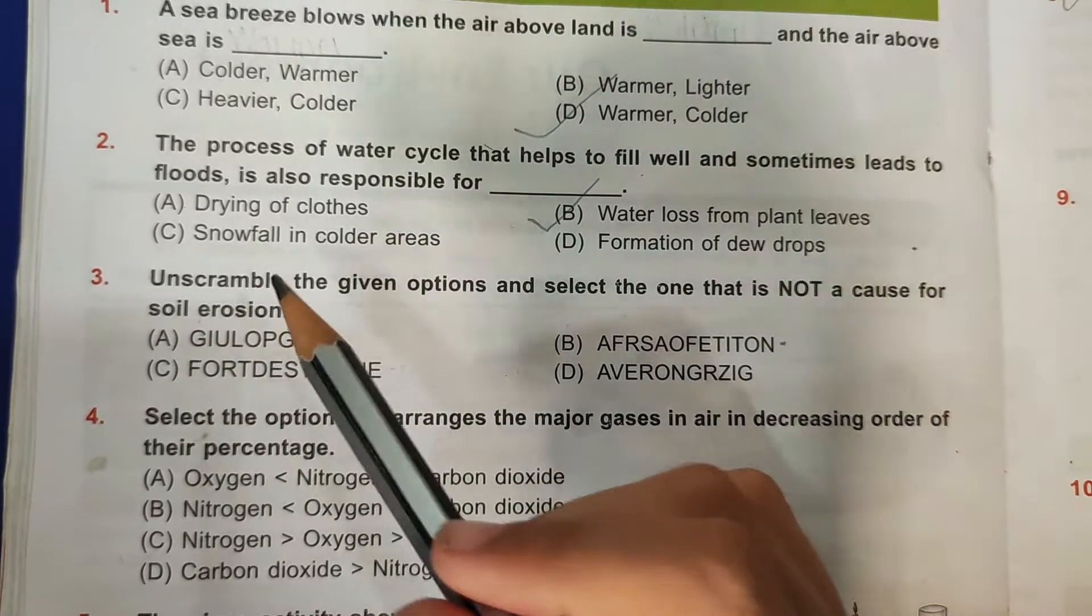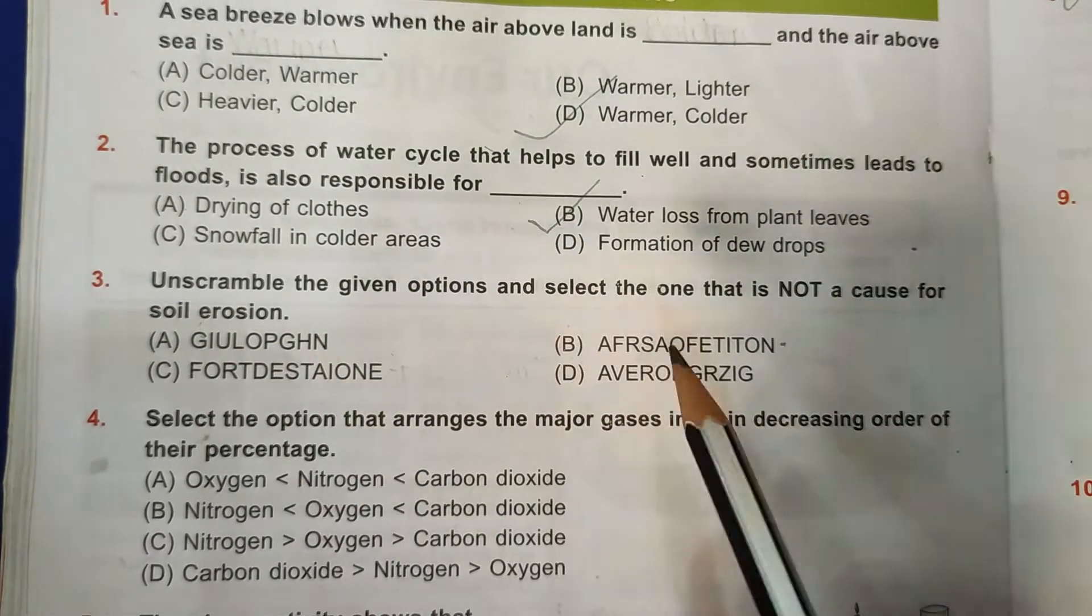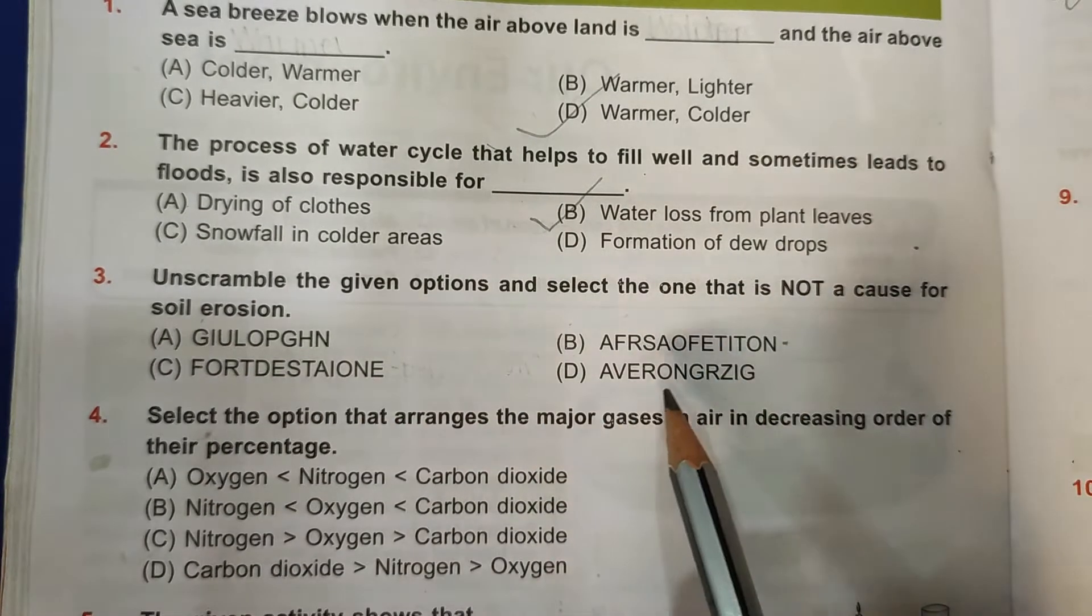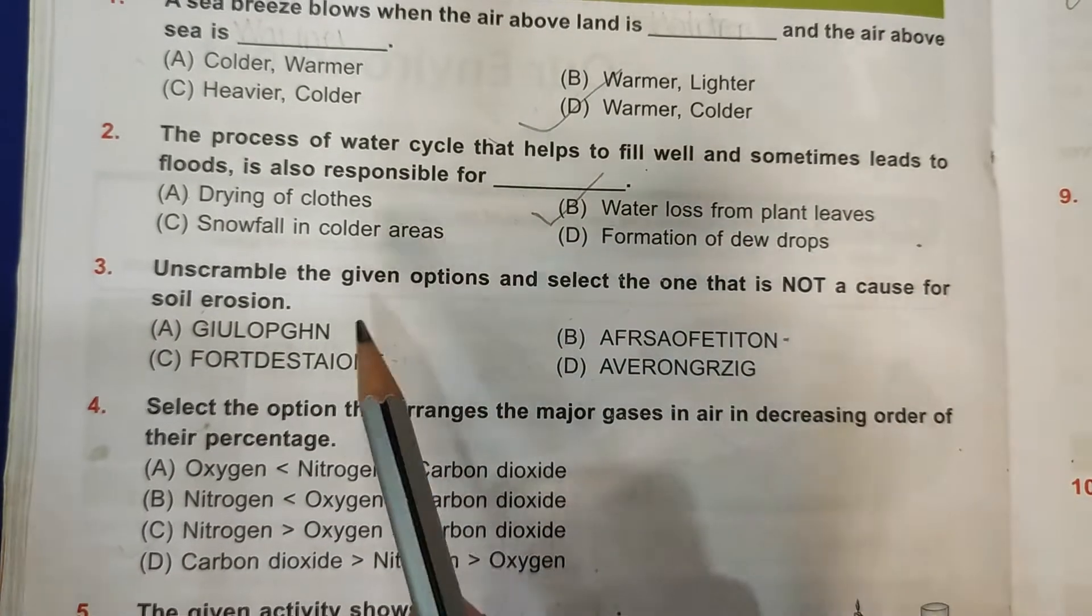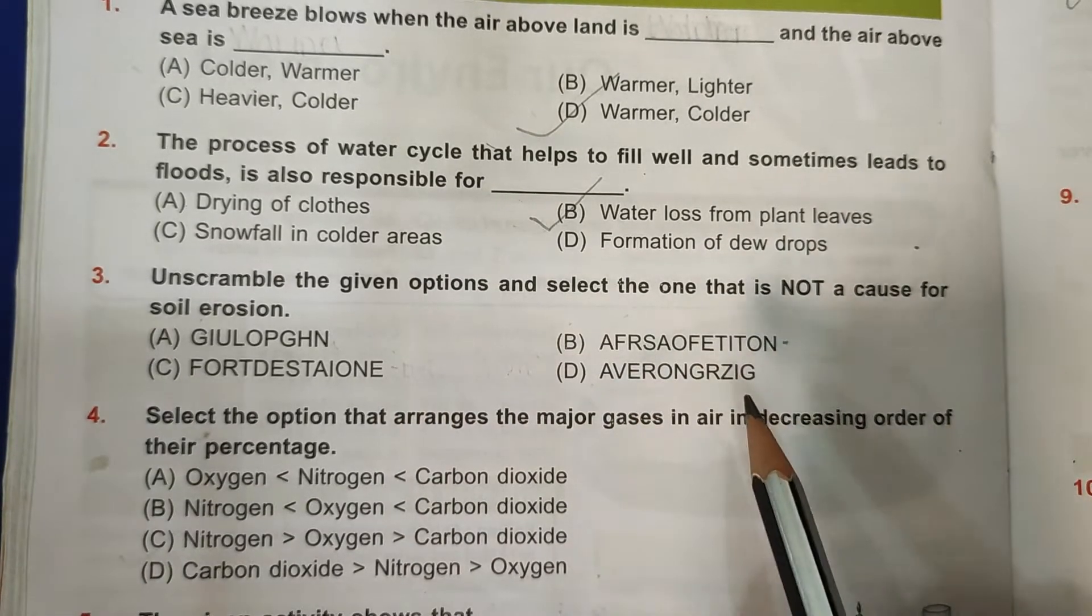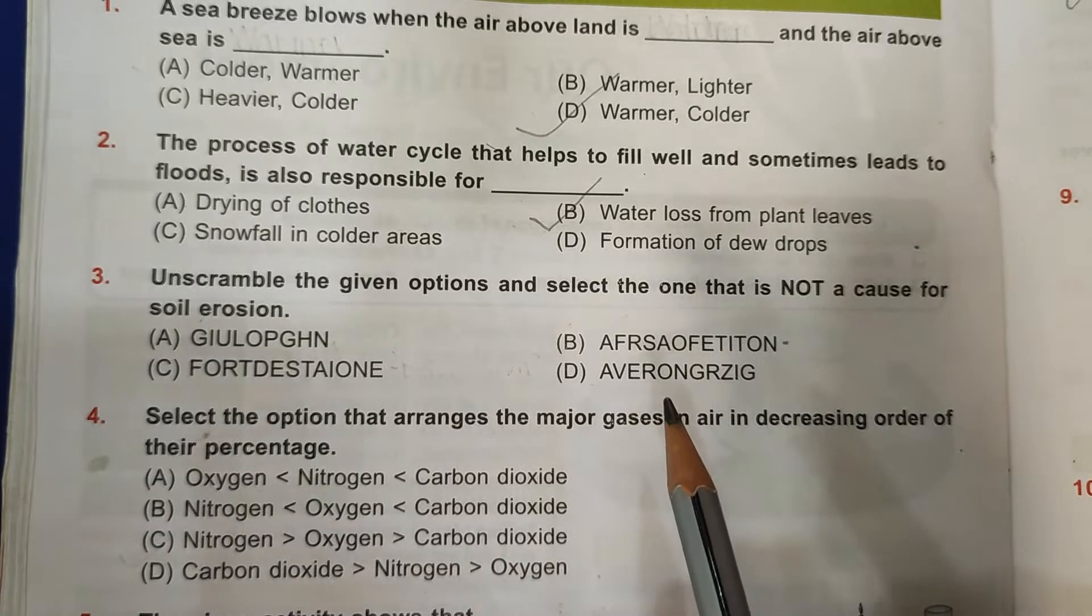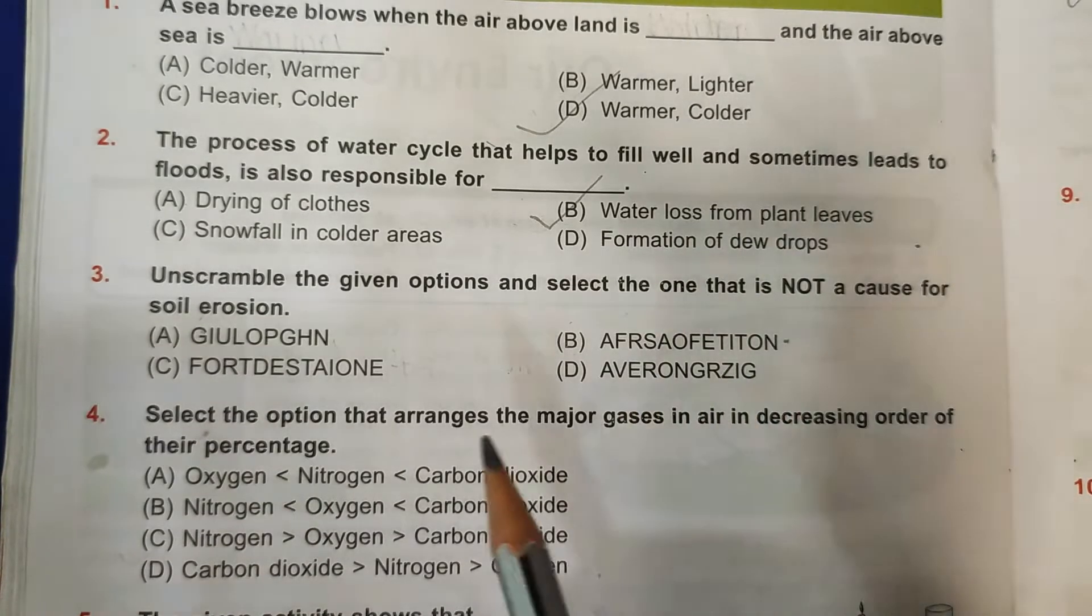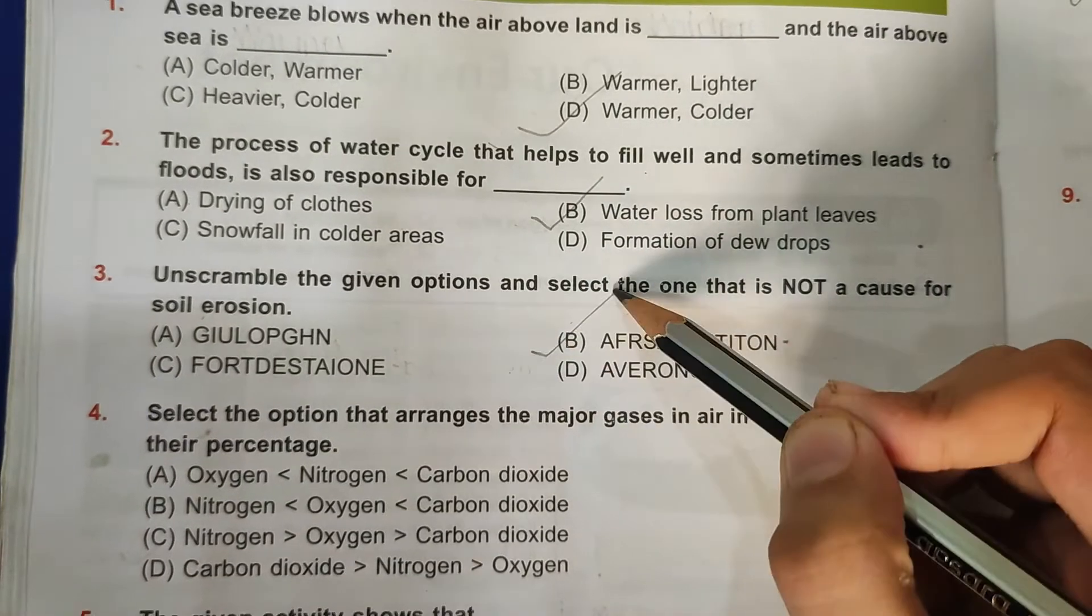Then third question: Unscramble the given options and select the one that is NOT a cause for soil erosion. So this is ploughing, this is afforestation, this is deforestation, and this is overgrazing.